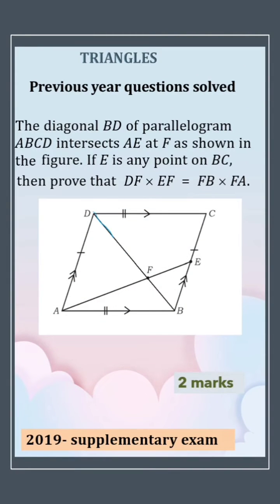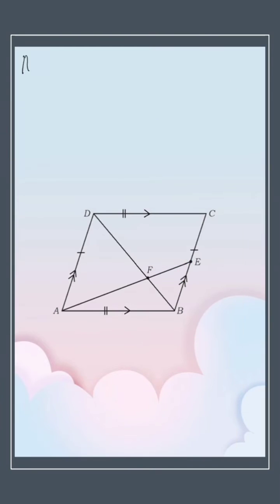Diagonal BD of parallelogram ABCD intersects AE at F. E is any point on BC. Then prove that DF into EF is equal to FB into FA. So now we have to concentrate on these two triangles.